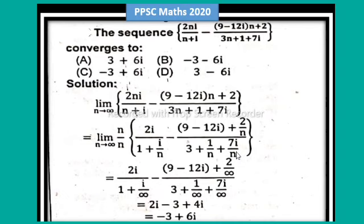so by applying limit n approaches to infinity 2i divided by 1 plus i divided by infinity i equal to 0, so 1 plus 0 that is equal to 1, 2i divided by 1 is equal to 2i minus 9-12i plus 2 divided by infinity equal to 0,